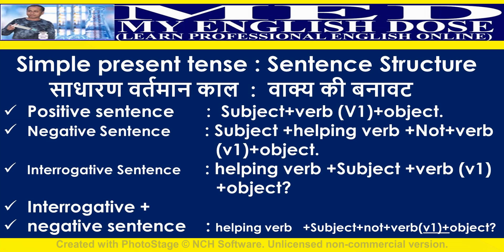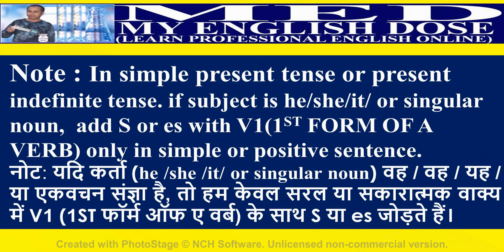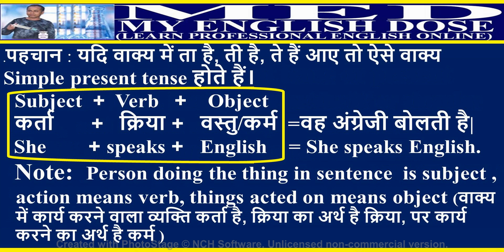Do not forget to add a question mark on interrogative sentences. In simple present tense, if the subject is he, she, it, or a singular noun, add 's' or 'es' with the first form of a verb — only in simple positive sentences. The person doing the thing in the sentence is the subject, the action means the verb, and things acted on means the object.